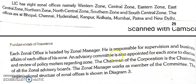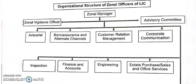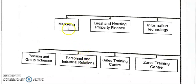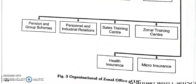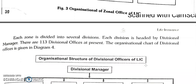The organizational structure of the zonal offices is similar to the central office. At the zonal level there is a zonal vigilance officer, advisory committee, and departments such as actuarial, bank insurance, customer relations, corporate communication, inspection, finance and accounts, engineering, estate purchase, legal housing and property finance, IT, pension and group scheme, personnel, sales training center, zonal training center, health insurance, and micro insurance. Every zone is further divided into divisions, headed by a divisional manager.